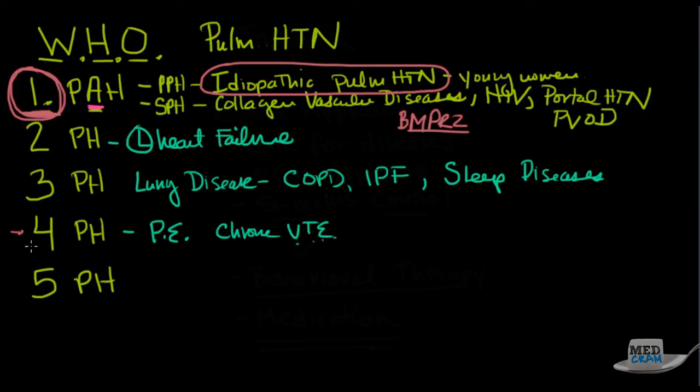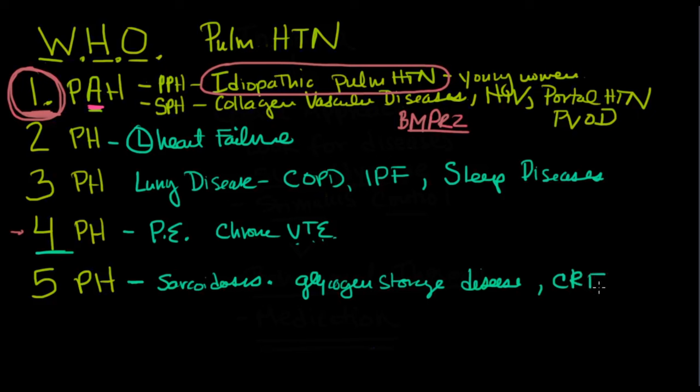Group four has to do with pulmonary embolism and chronic VTE. There's a medication that we'll talk about that actually is approved for WHO four. And then finally, five was kind of left there for those that are unclear. So hematological disorders, myoproliferative disorders, splenectomy, sarcoidosis, glycogen storage diseases, fibrosing mediastinitis, chronic renal failure.